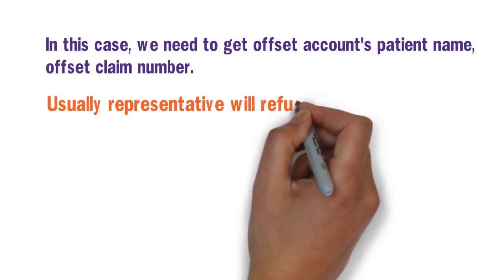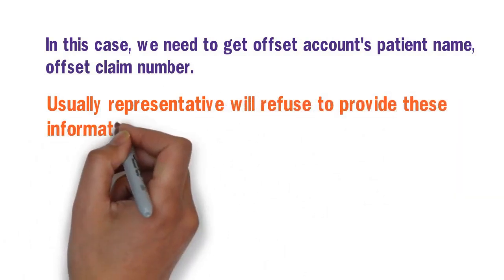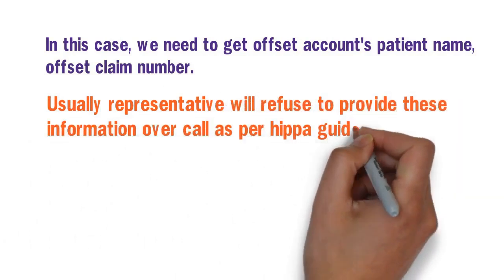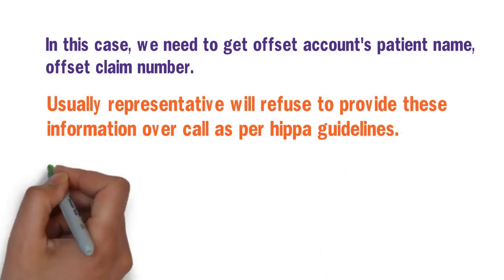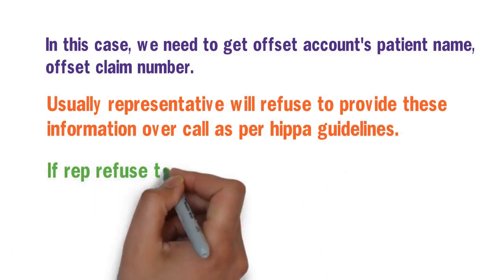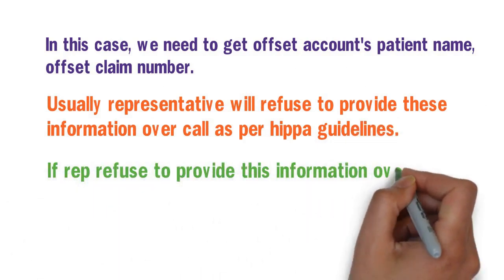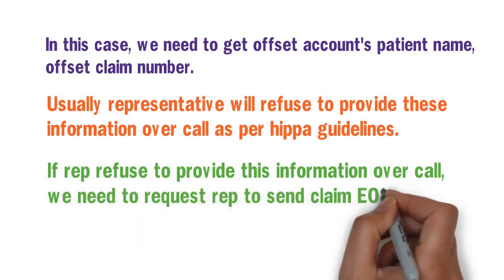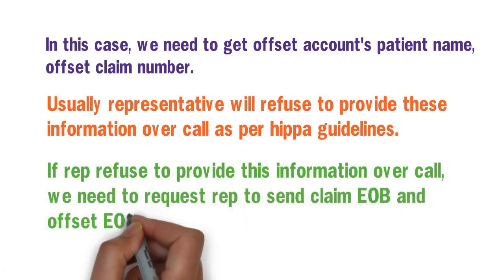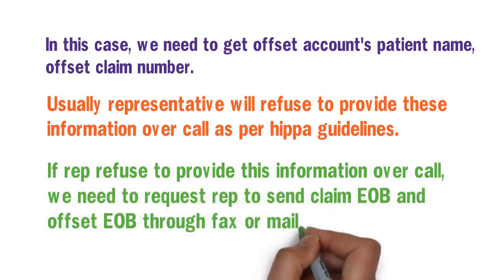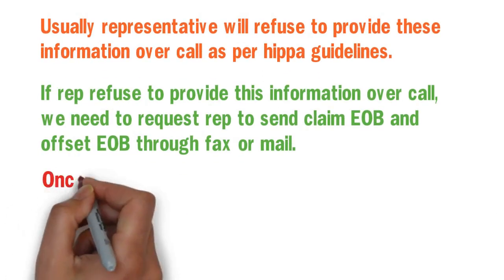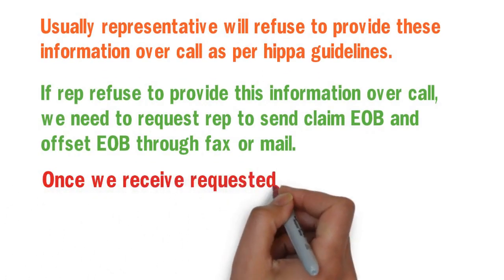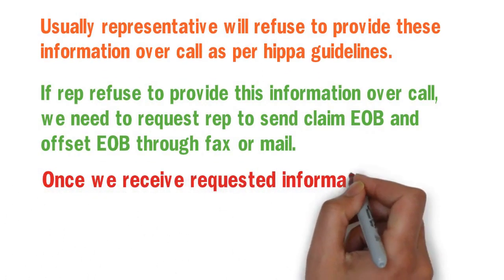Usually, the representative will refuse to provide this information over the call due to HIPAA guidelines. If the rep refuses to provide this information over the call, we need to request the rep to send the claim EOB and offset EOB through fax or mail. Once we receive the requested information, payment posting will be done.